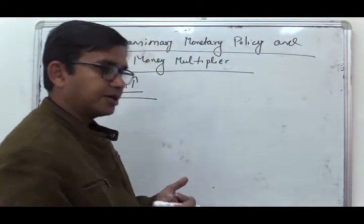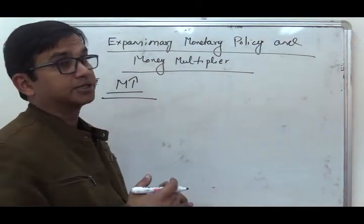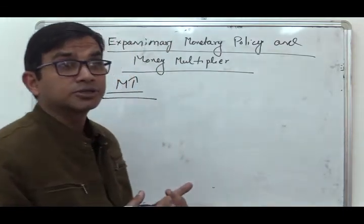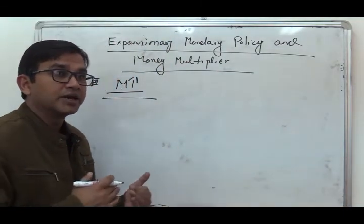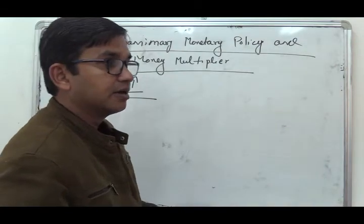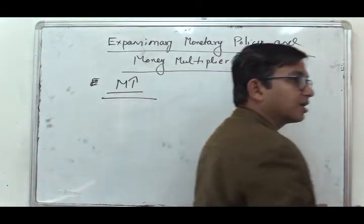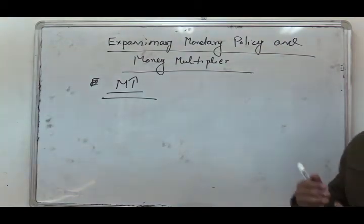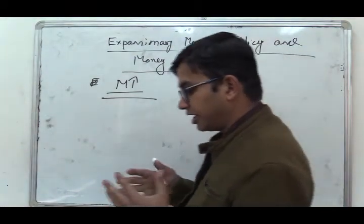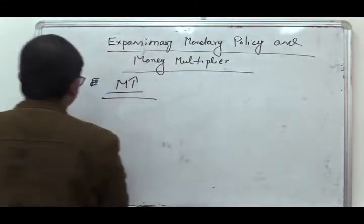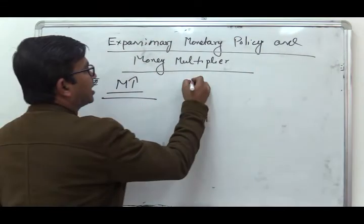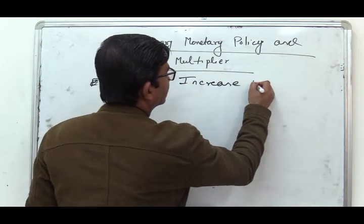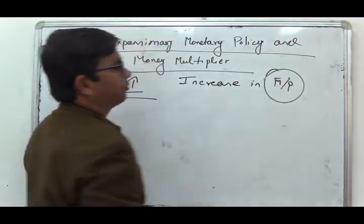It can also be done by open market operations by the central bank, through which the central bank purchases bonds from the open market and money is injected into the economy. Besides that, commercial banks are also asked to increase their credit creation. Whatever the instrument, it will inject more money into the system, resulting in an increase in M by P.